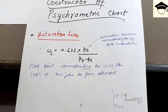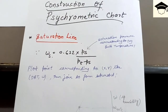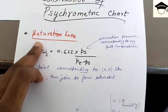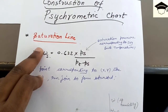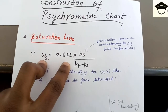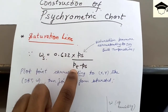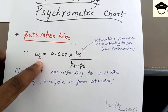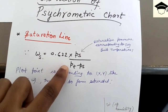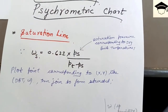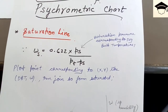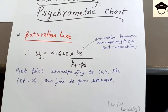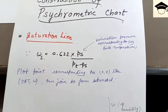Saturation line: on the saturation line the relative humidity is 100%. The specific humidity formula is Ωs = 0.622 × Ps / (PT − Ps), where Ps is the saturation pressure corresponding to dry bulb temperature and PT is the total pressure. If drawing at atmospheric pressure, PT = 760 mmHg or 1.01325 bar.